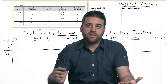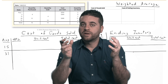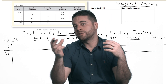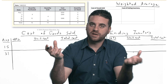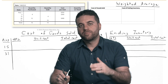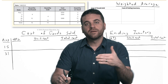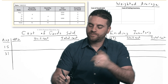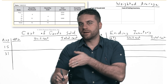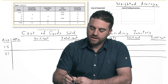Weighted average is an average, but not simply adding costs and dividing by the number of entries, because that gives equal weight to each one. Instead, we give more weight to the cost that has more quantity. That's why it's called weighted average. We need to find the average cost per unit, and every time you have a purchase, you need to recalculate your average to be ready to calculate cost of goods sold whenever a sale occurs.